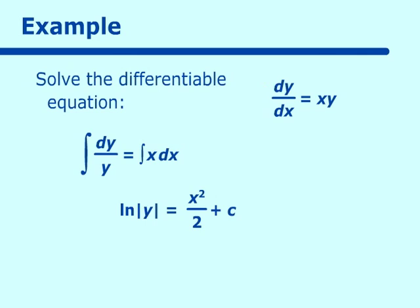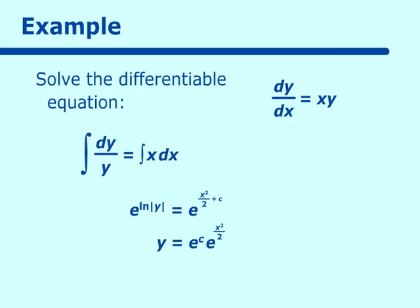Recall that e raised to the ln of something equals that something. So we raise both sides to e: e^(ln|y|) = e^(x²/2 + c). This gives y = e^c · e^(x²/2). This is how we usually finish solving with a natural log.